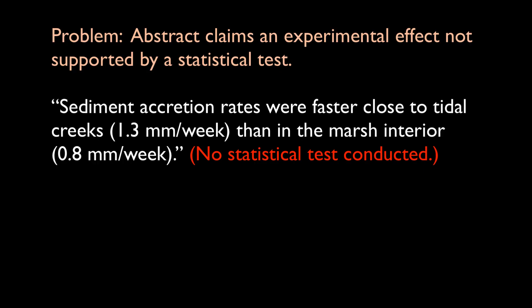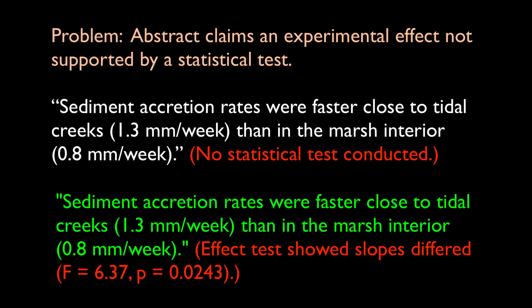Authors may make this mistake when they find themselves with negative results that contradict their expectations and decide to say in the abstract what they think should have happened instead of what did happen. They may rationalize their actions by telling themselves that they would have found a difference with a larger sample size. Here's another situation in which an author reports different linear trends, perhaps seen in a graph, but fails to conduct a statistical test to determine if the slopes differed from each other. The correct approach is to conduct the relevant statistical test.